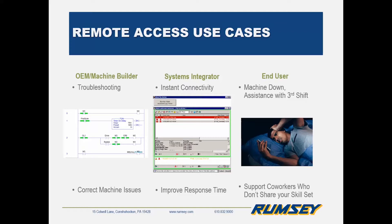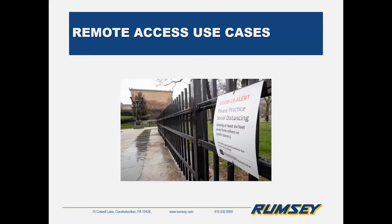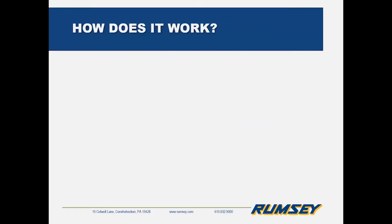So what are some other possible remote applications depending on who you are? For an OEM or machine builder, you might want to connect to correct a problem — fix an inadvertently changed value or some other minor error. A systems integrator might be tasked with the maintenance of a specific line or set of machines and can really improve response time to an alert state. The end user might want it because someone on second or third shift is running into a problem they don't have the skills to resolve, and instead of going into the plant, you might be able to rectify the problem remotely. And of course, with things as they are, maybe you just can't get in every single day.